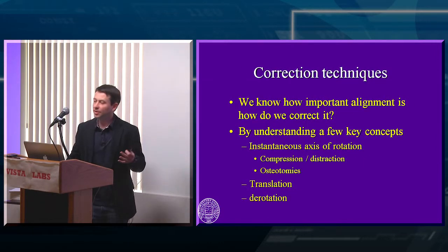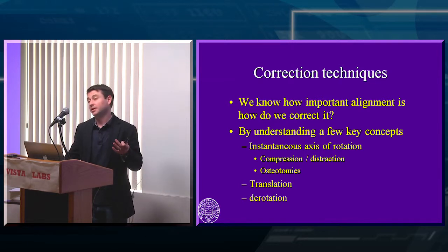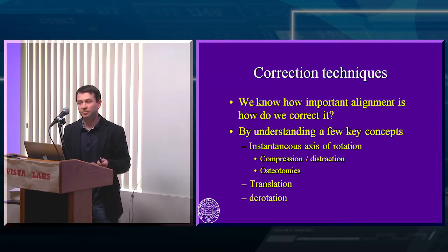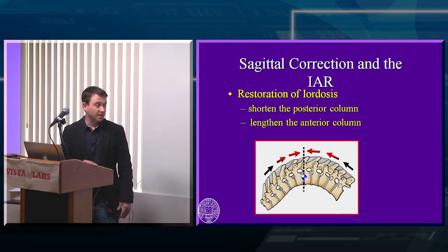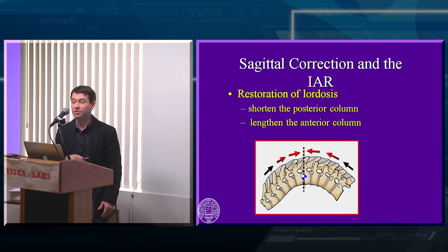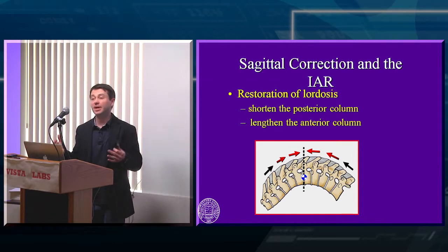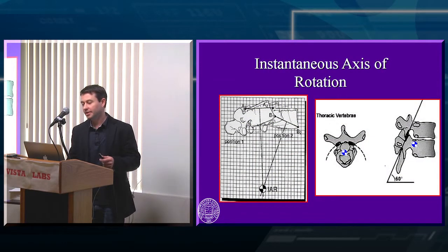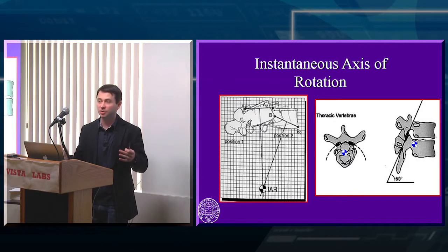We know alignment is important. To correct it, you have to assess flexibility, and if you don't have it you have to apply forces — compression, distraction, translation, derotation. The instantaneous axis of rotation is a concept you need to understand: it's simply the point in space the spine will rotate around when you apply force. We're almost always trying to improve sagittal alignment — adding lordosis or reducing kyphosis — which usually means shortening the posterior column. Remember the IAR changes as you apply different forces, and it's a three-dimensional deformity.